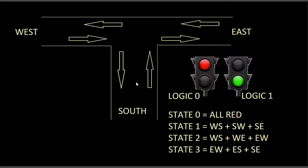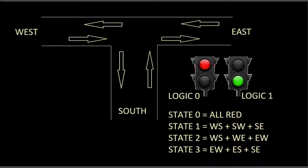State three caters for the one set of commuters we haven't dealt with so far — those going from east to south. If we give those going from east to south right of way, then those going from south to east can also get a green light, and those going straight from east to west can also get a green light. So we have east to west, east to south, and south to east. Those are the four states we'll be working with, so let's go ahead and come up with a state machine.